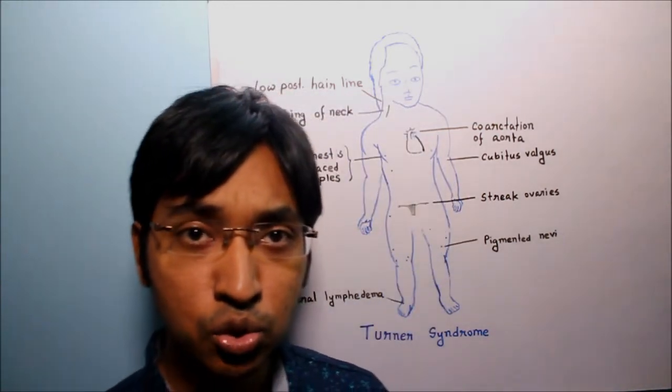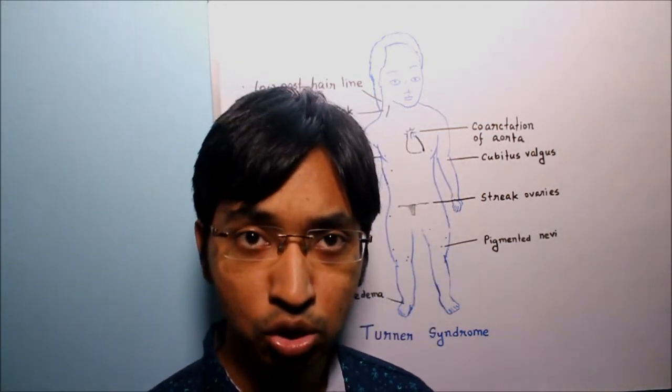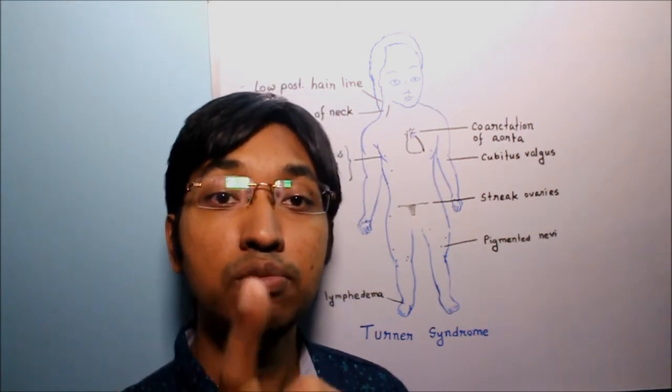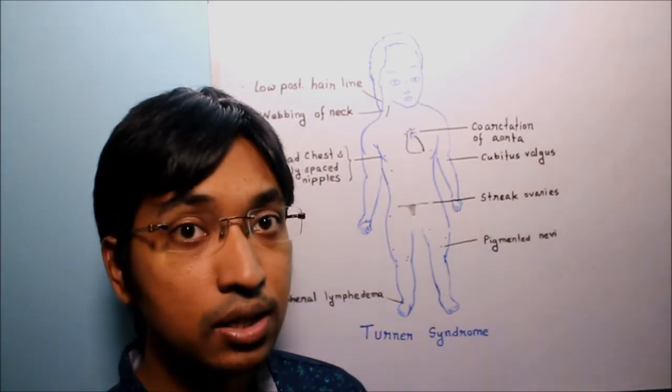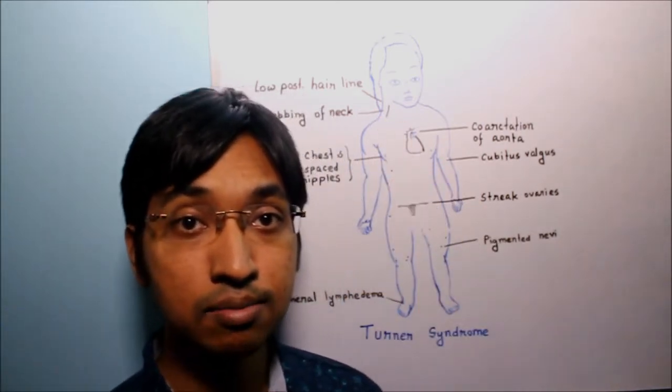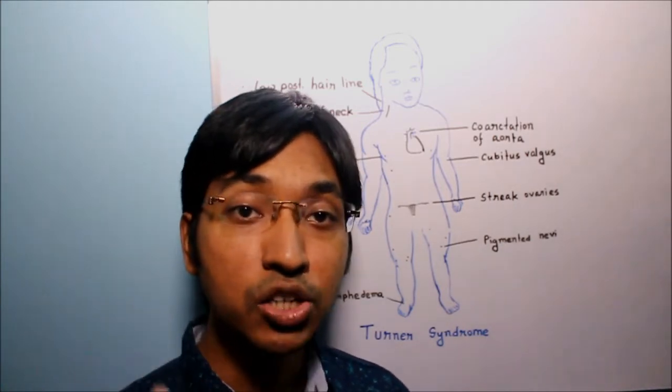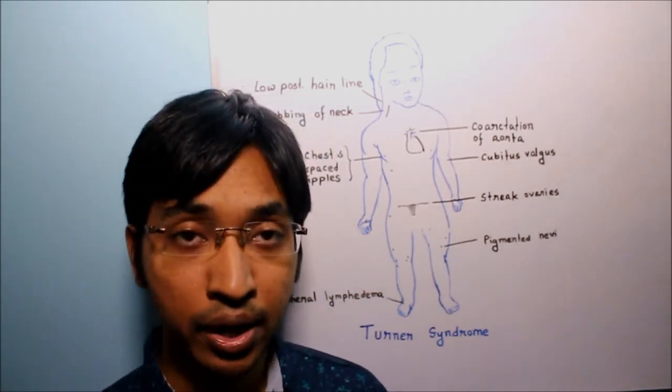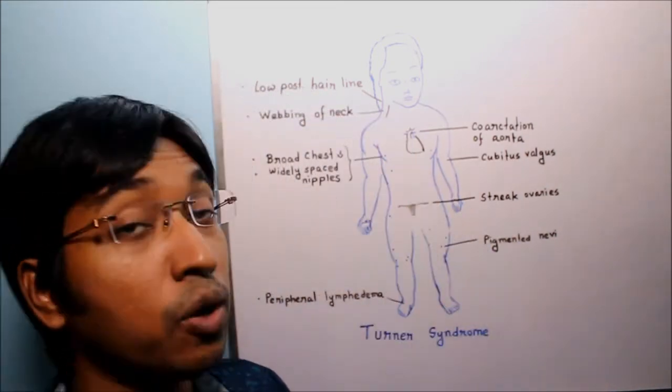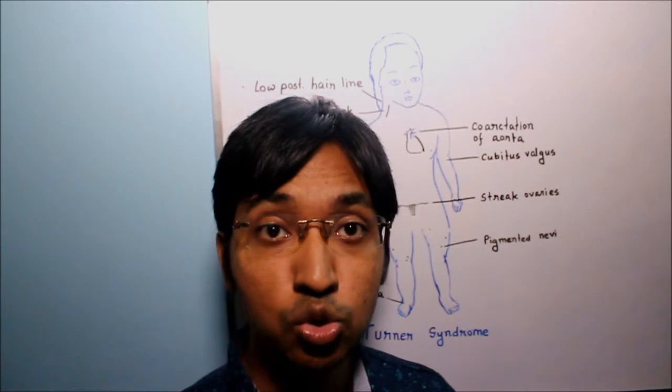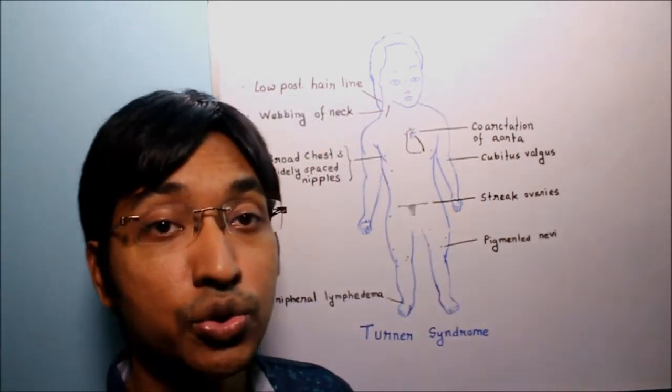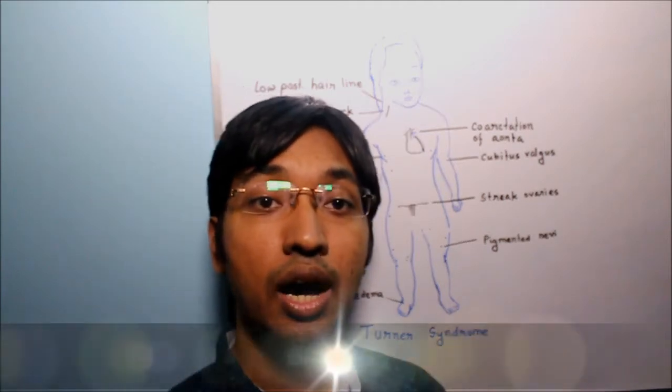Why is there swelling or edema of dorsum of hand and foot? The mechanism is due to lymph stasis. And why is there swelling of nape of the neck? The mechanism is due to markedly distended lymphatic channels. As a matter of fact this swelling of the nape of the neck is also referred as cystic hygroma.